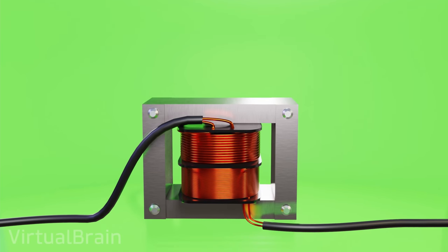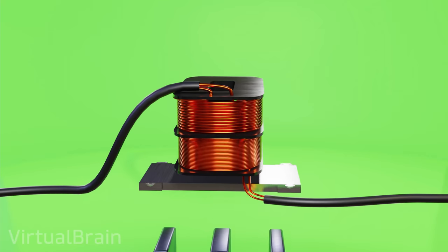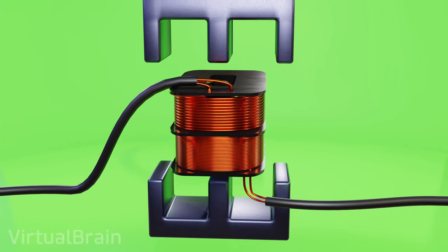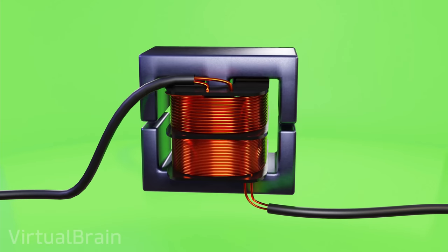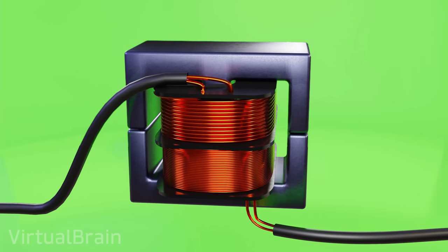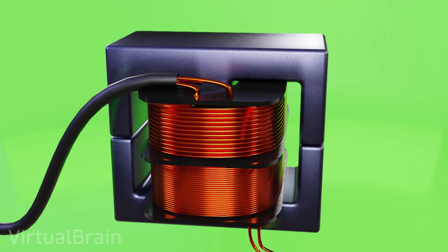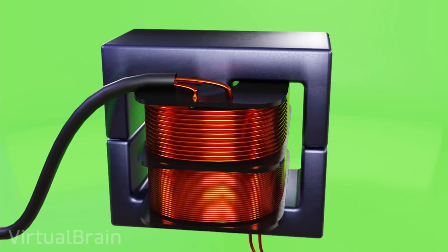And finally, the fourth thing we should know is that there are many types of cores which allow us, given its high magnetic permeability, to increase the magnetic flux generated by the primary coil, and as a consequence, to also increase the efficiency of the transformer, since basically this magnetic flux is the bridge that allows the transmission of energy between one coil and the other.